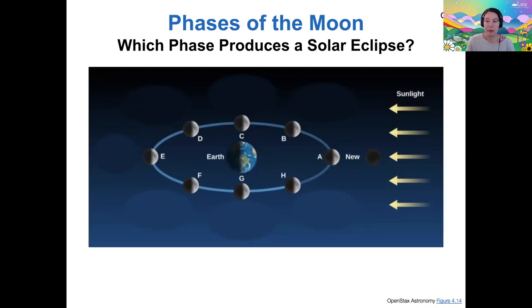We know that in an eclipse, one body is essentially blocking light from reaching another body. For a solar eclipse, the sun is the thing being eclipsed. That means the moon needs to be between the earth and the sun. Therefore, a solar eclipse only happens on the new moon.